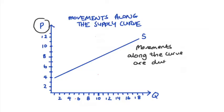So movements along the curve are always due to changes in the price of the good and that's because that's exactly what the shape of the supply curve is illustrating, the various quantities that are supplied at the various prices.